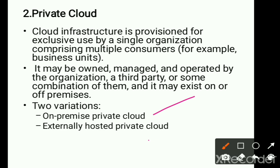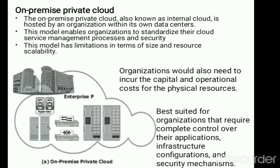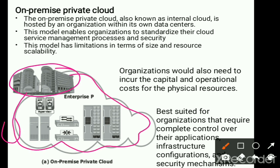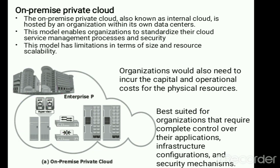There are two variations: on-premise private cloud and externally hosted private cloud. The on-premise private cloud is known as an internal cloud and it is hosted by the organization within its own data center. In the diagram you can see an enterprise that has all the resources acting as its own cloud, accessed only by that enterprise and not shared with any other enterprise. Security is not compromised in this model.